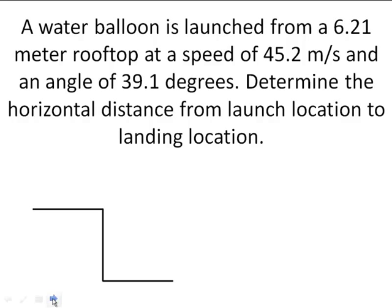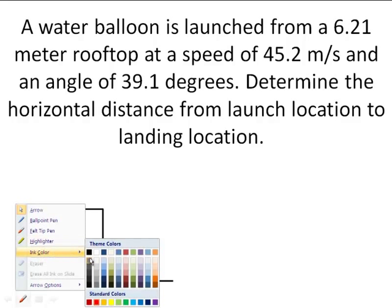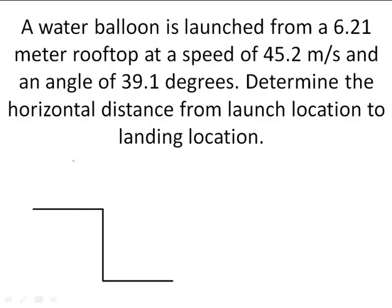The first thing that I want to do is draw a picture that I already have kind of drawn for us here and start labeling this picture with the givens that we have. I've told you that there's a 6.21 meter rooftop, so that means it's being launched off of the ground already. So my balloon is soaring through the sky, and it was originally launched at 39.1 degrees. I was also informed that the launch velocity was 45.2 meters per second. Now, that's all we've been given, and the question is how far down here will it land. And that's going to be my x, or my total horizontal displacement.